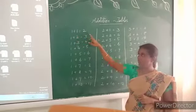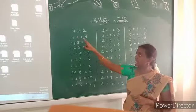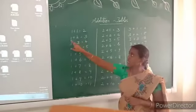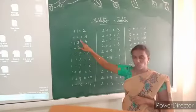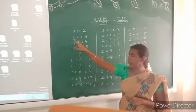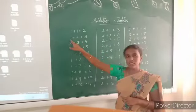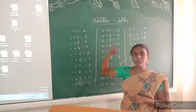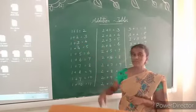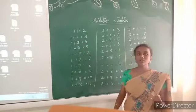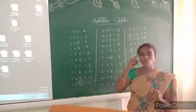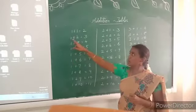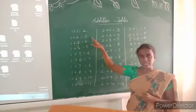Okay children, look at the second one: 1 plus 2. See children, if you compare these 2 numbers, 2 is the greater number. Then 1 is the smaller number, so keep the greater number in your mind, the smaller number on your finger. So 2 after 3 — if you add 1 with 2, we get 3.